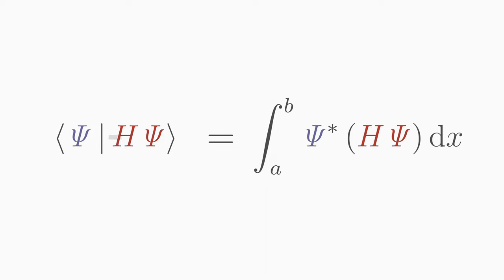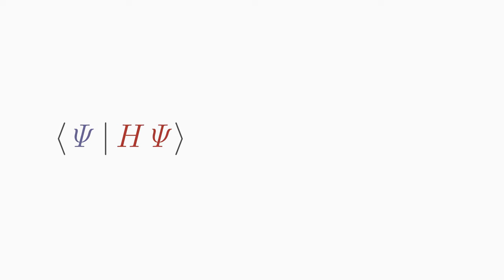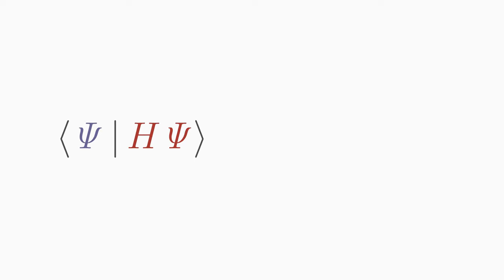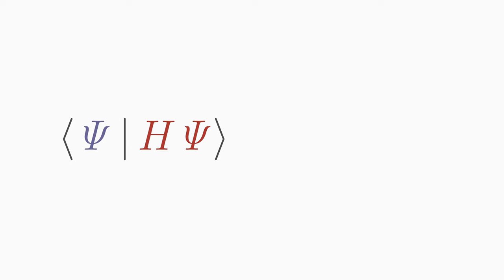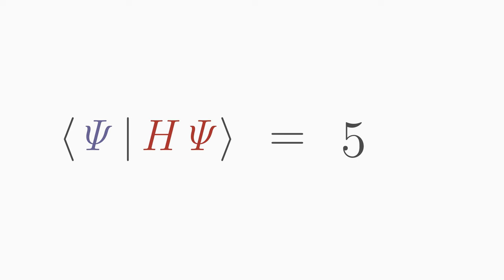In this example, the mean value of the operator H is calculated using the one-dimensional spatial wave function Psi and its complex conjugate. A mean value, as we know it from everyday life, is a real number.